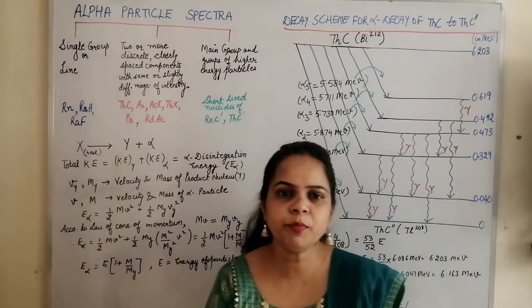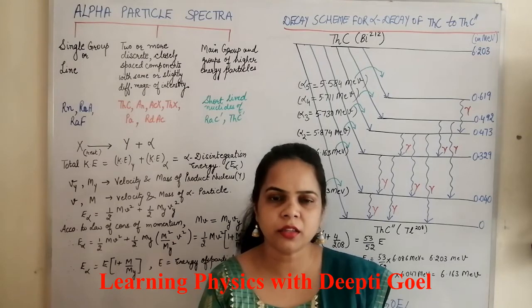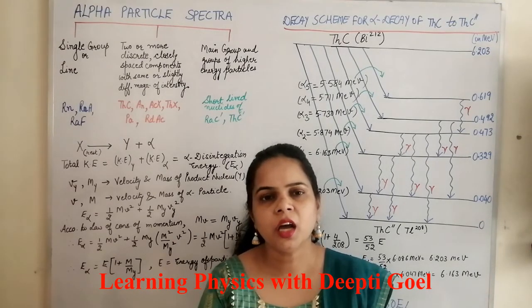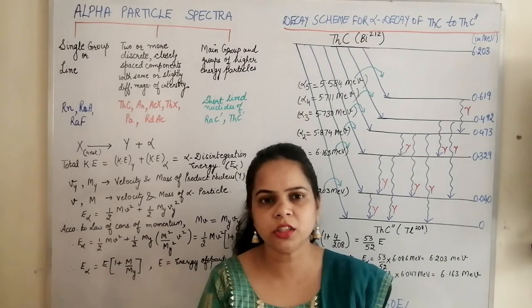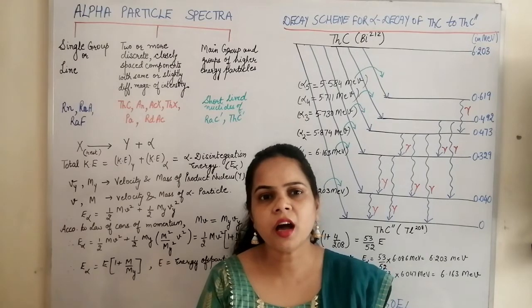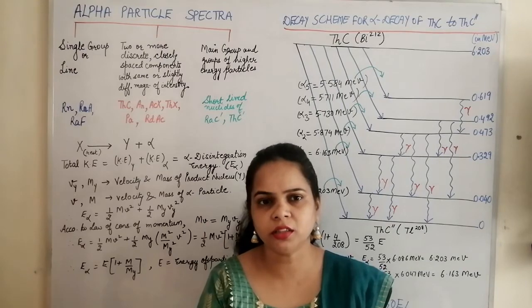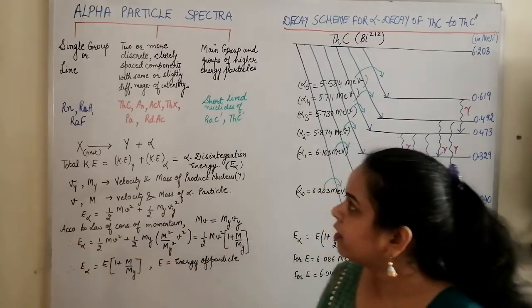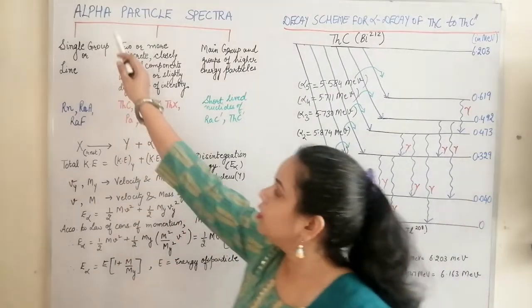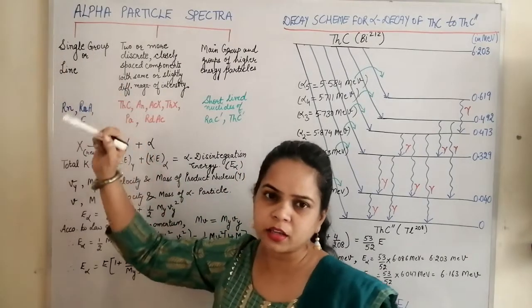When the parent atom disintegrates to the daughter nucleus, it could emit alpha particles. The alpha particles emitted from the parent nucleus are not found to have only one particular energy. There are a number of alpha particles emitted with varying energy. The spectra of the alpha particle were grouped into three categories, where the first type consisted of a single group or a line spectra.